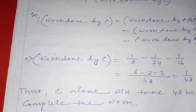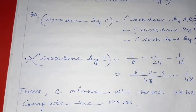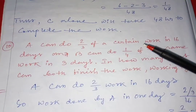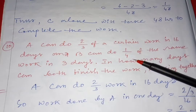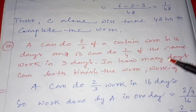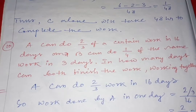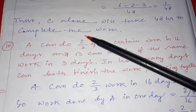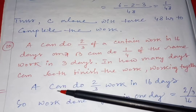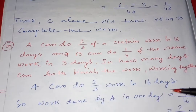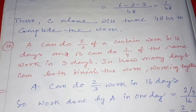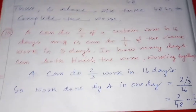Is it an easy problem? I hope you understand the concept. Now we will move forward to the next problem. This is question number 10, which says A can do 2 by 3 of a certain work in 16 days and B can do 1 by 4 of the same work in 3 days. In how many days can both finish the work together? Till now we were discussing the full work, but here it is in fraction. No need to worry — A can do 2 by 3 work in 16 days, so work done by A in one day equals 2 by 3 divided by 16, which equals 2 by 48, which equals 1 by 24.